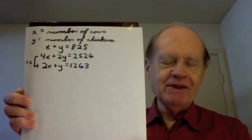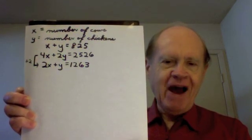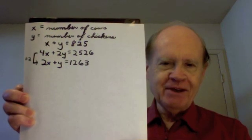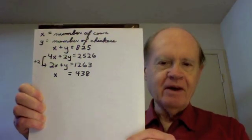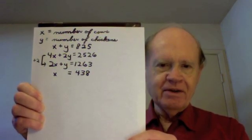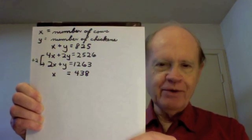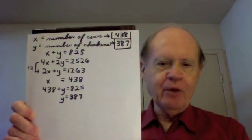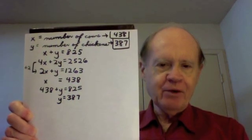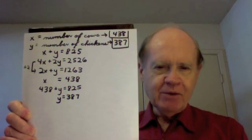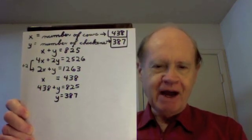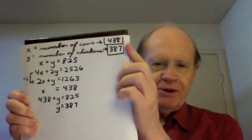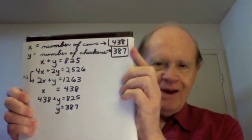There are a number of ways to solve this system. The way I'm choosing is to first divide the second equation by two, which gives 2x plus y equals 1263. From that equation, I subtract the top equation, and I get x equals 438. That means there are 438 cows. I then substitute that value, 438, into the first equation, and I have 438 plus y equals 825. I subtract 438 from both sides, and I get y equals 387. And so we have our solution: there are 438 cows and 387 chickens.